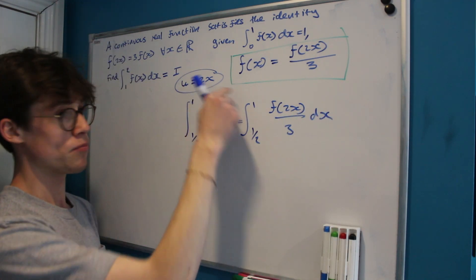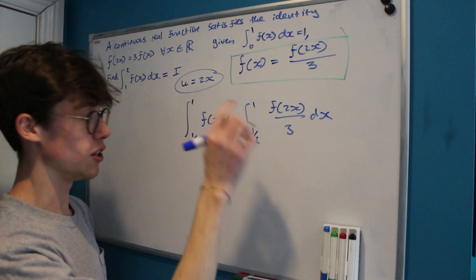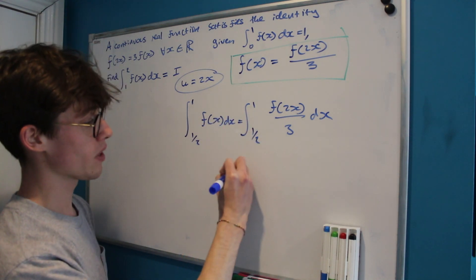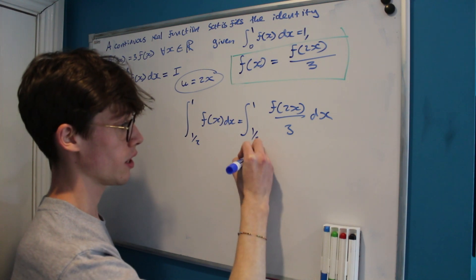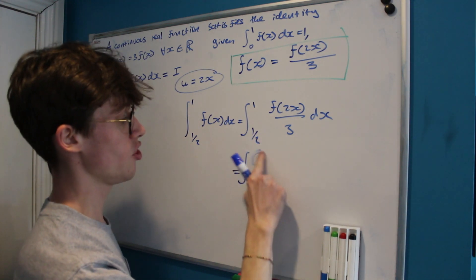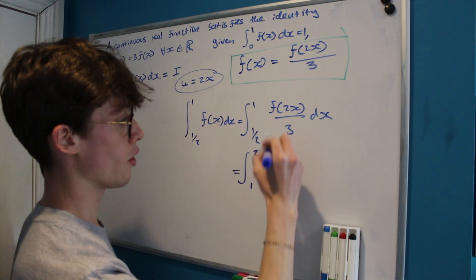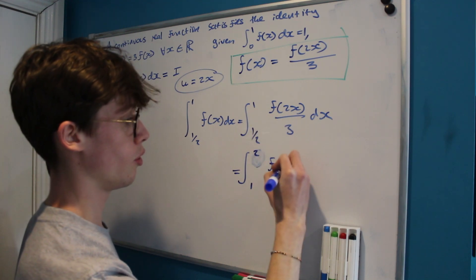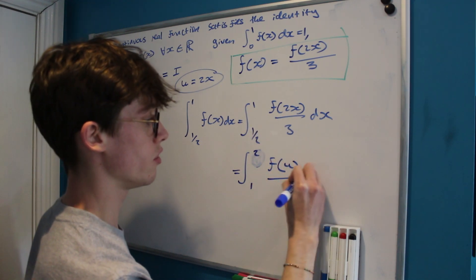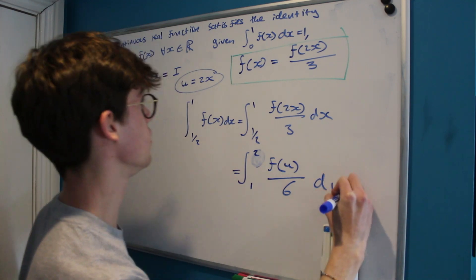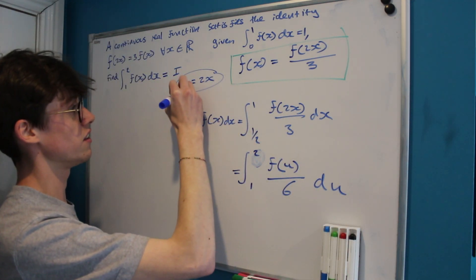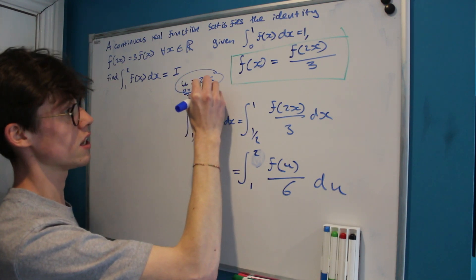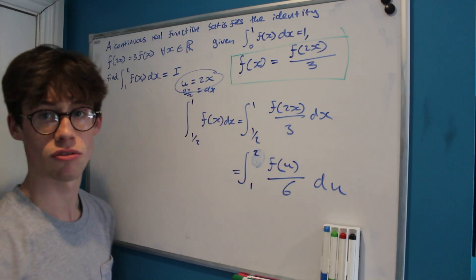And now here presents the u sub that we were speaking about earlier. That's equal to the integral from 1 to now 2 of f(u) divided by 6 du, because of course u being equal to 2x implies that du over 2 equals dx, so we've got to have our extra factor of a half there.